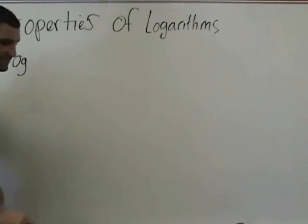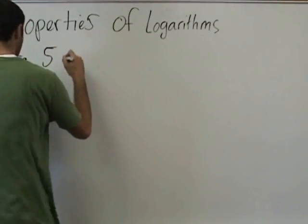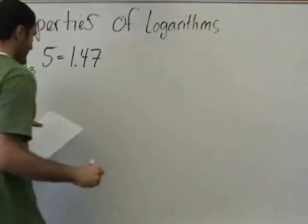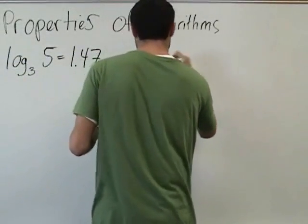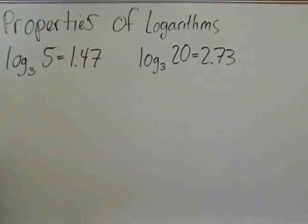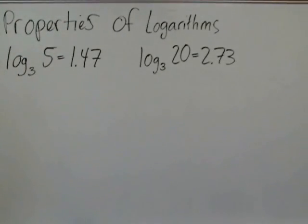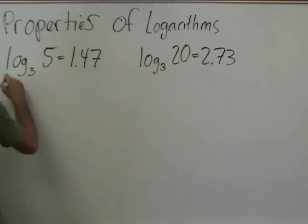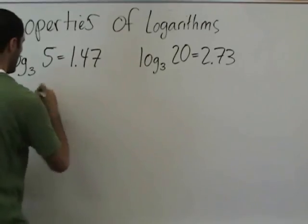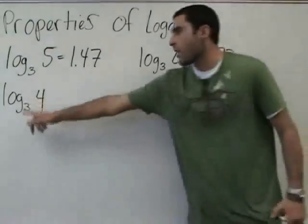So here's given information. Log base 3 of 5 is 1.47. Log base 3 of 20 is 2.73. And now the problem given to us is solve without using the calculator, without using the log button in your calculator. Solve log base 3 of 4.